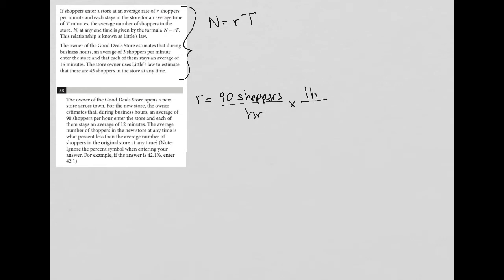One hour is 60 minutes. The hours cross out diagonally. So I go to my calculator and I figure out what 90 divided by 60 is, which is 1.5. So R is equal to 1.5 shoppers per minute.